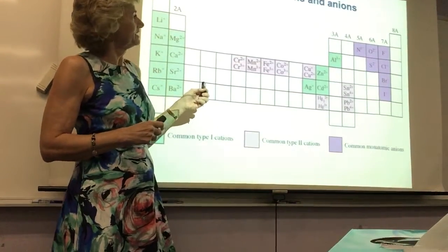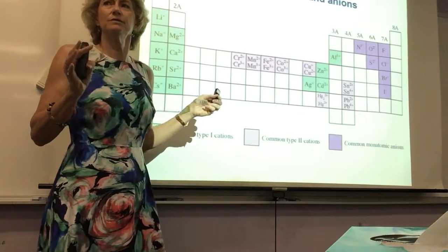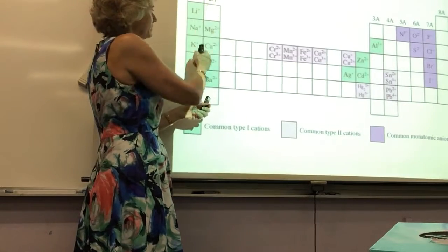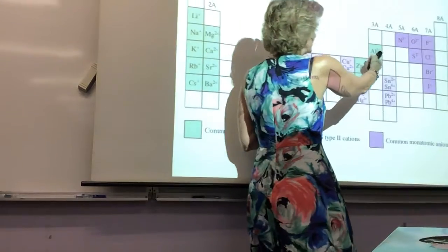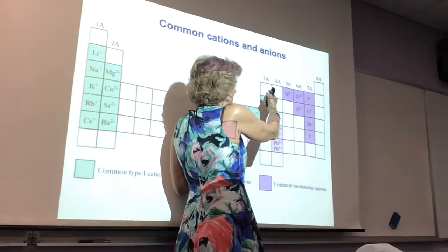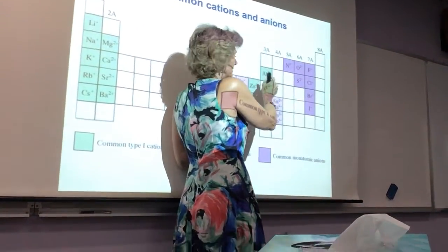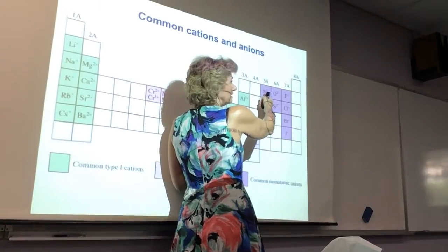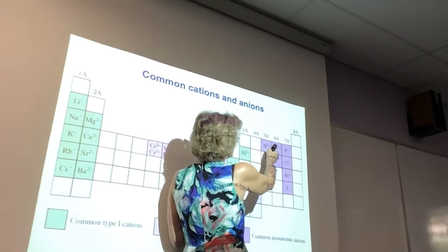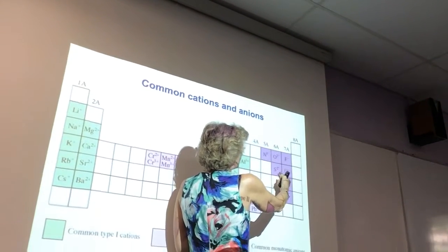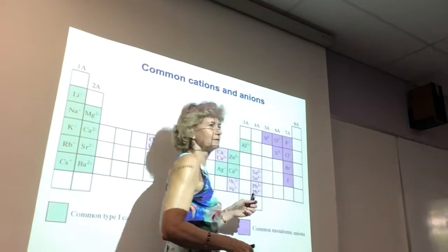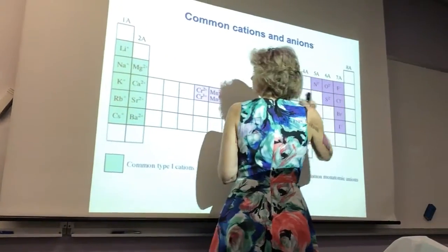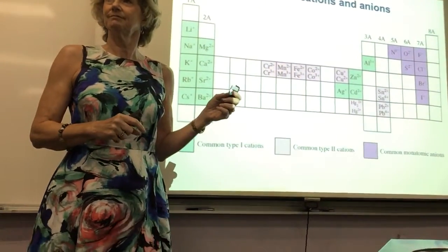So here's some common anions and cations. I'll tell you the ones you need to know. Group one, always form plus one cations. Group two, always form plus two cations. Aluminum is always plus three. Boron's a non-metal. So remember, it's a metalloid, it's a little different. But aluminum, you can always count on being plus three. Nitrogen, for the ion, nitrogen ion is called nitride. It's always three minus. Oxygen and sulfur are always two minus. And the halogens are always one minus when they're ions. So negative ions are called anions. Positive ions are called cations.